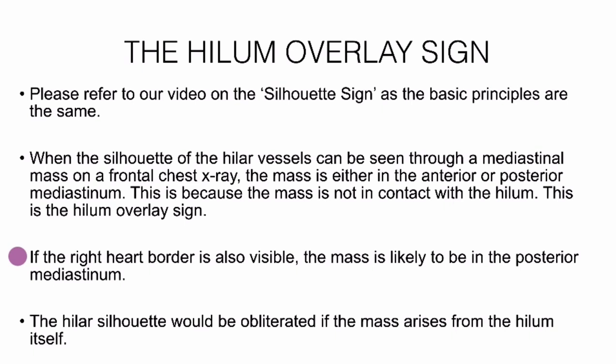If the right heart border is also visible in addition to this, the mass is likely to be in the posterior mediastinum. The hilar silhouette would be obliterated if the mass arises from the hilum itself.